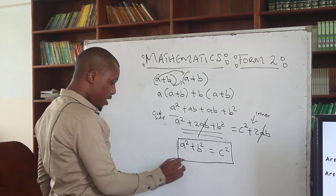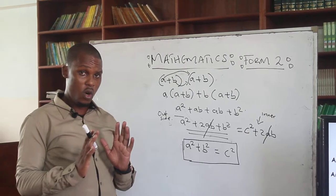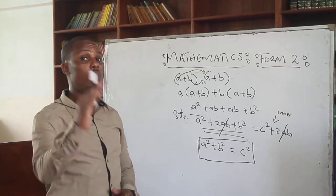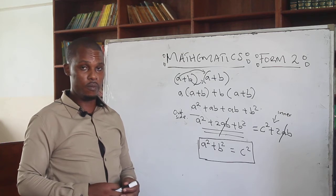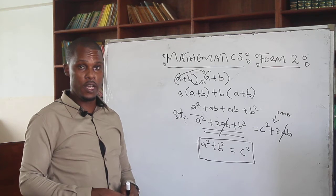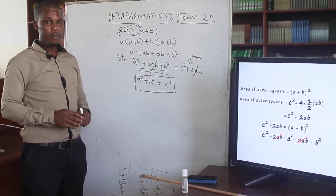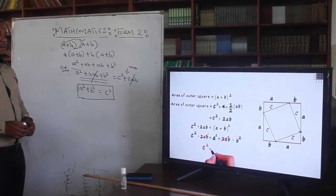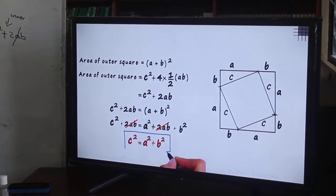So this is the theorem that we are talking about. In the case of the derivation, during the exam, I will not be focusing on asking you to derive the Pythagoras theorem, but I want you to apply this theory during your calculation. From both sides, we get C squared equal to A squared plus B squared. This is the Pythagoras theorem.